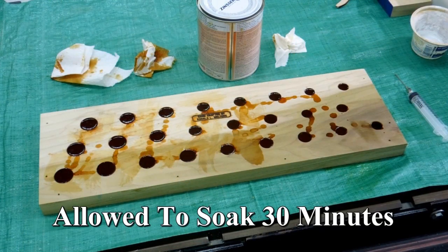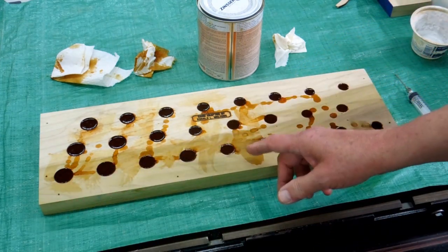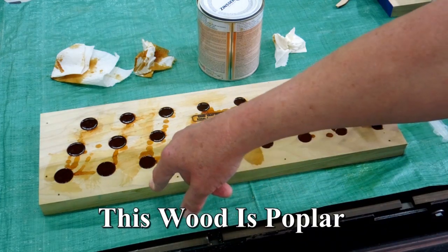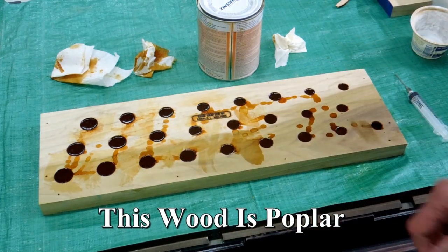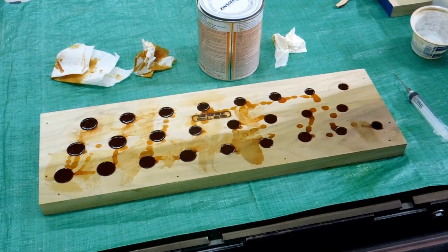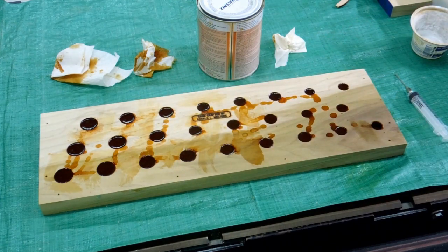This has been soaking for a little over a half hour. These are one inch, seven-eighths, three-quarter and five-eighth holes. This piece of wood is about an inch thick. These have dropped a total of about an eighth of an inch. These a bit less as that shellac continues to soak in there.